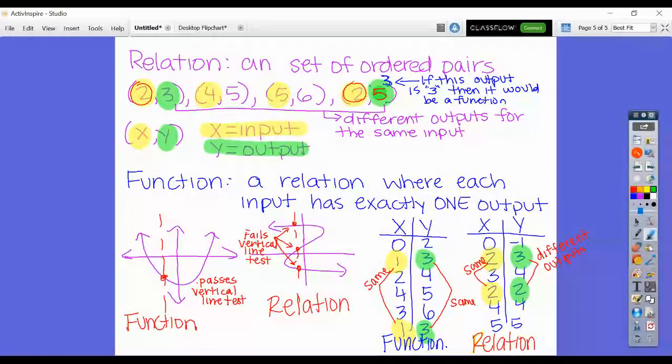In the second table, I have 0, 2, 3, 2, 4, and 5. So 2 is input twice. I have the same input, so I have to look at the outputs. The first time it gives me a 3, the second time it gives me a 2. They have the same input but a different output, so that is just a relation.